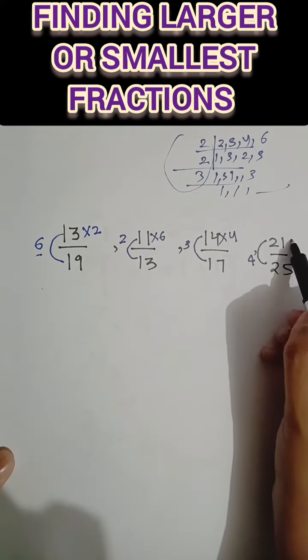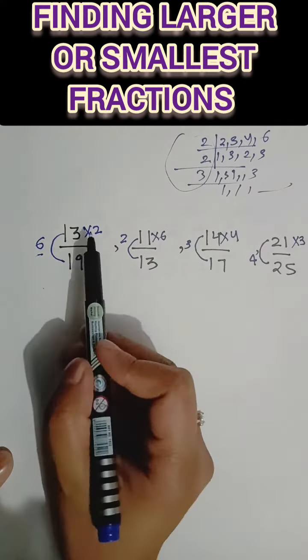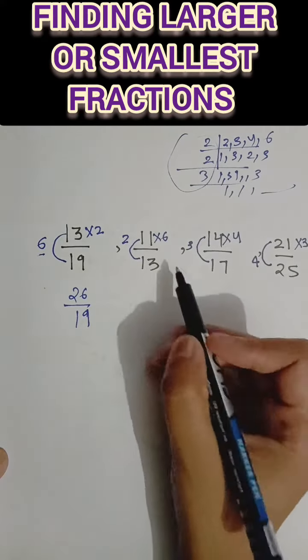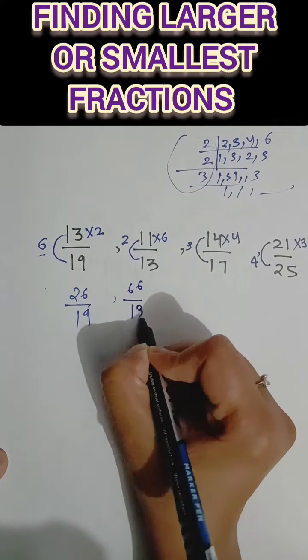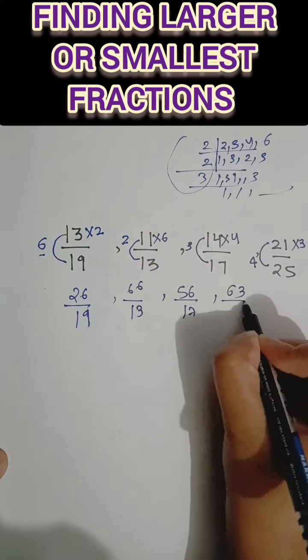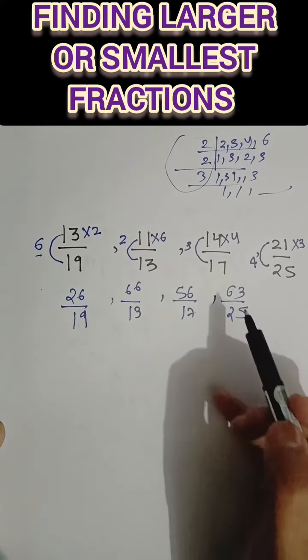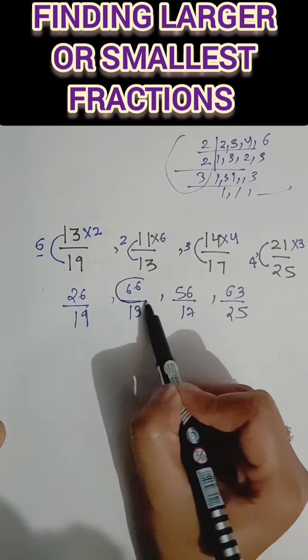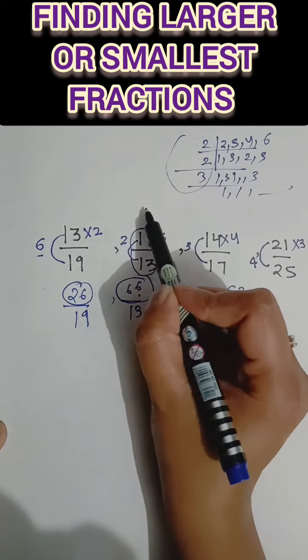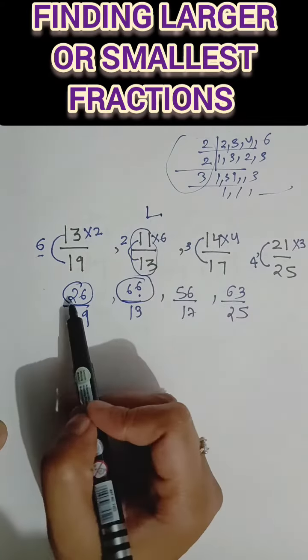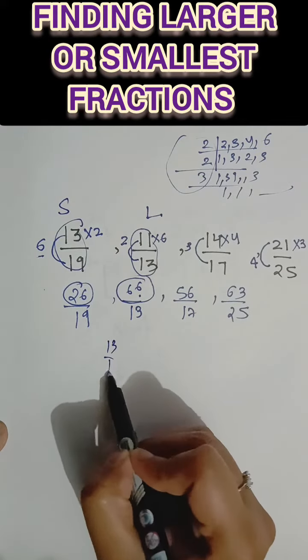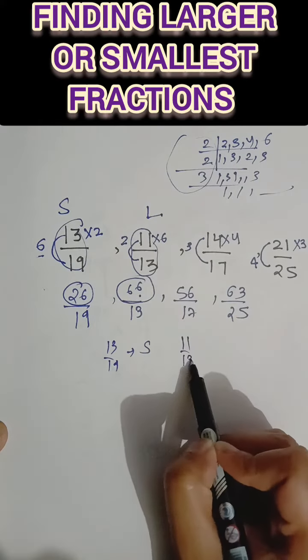So which is greater? 6 is the big number and the biggest number is 26. This means this number came from here. So 11 by 13 fraction is the largest fraction. And this will be the smallest fraction. So 13 by 19 is the smallest and 11 by 13 is the largest.